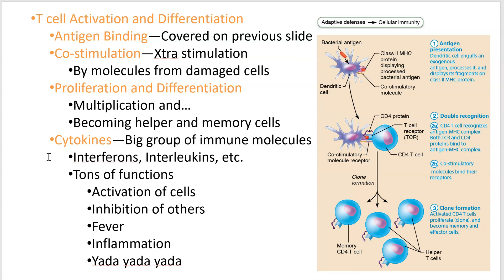The last thing is that you produce molecules called cytokines. There's a big table in the book, but I'm not going to have you learn all the technical details. Cytokines include interferons and interleukins, and they have tons of functions. Simply put: cytokines are produced by the immune system and they do a lot of interference, stimulation, and helping out.